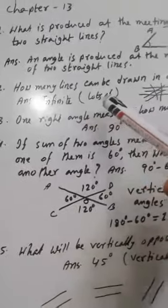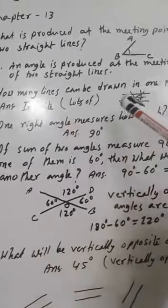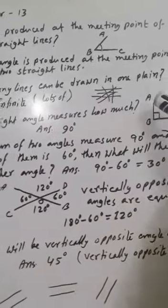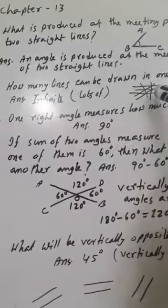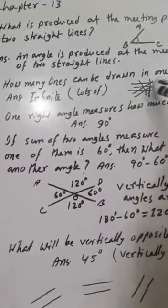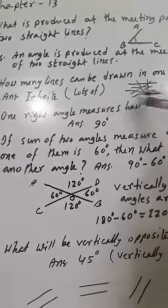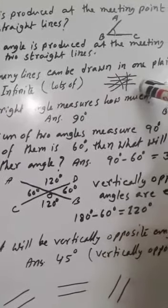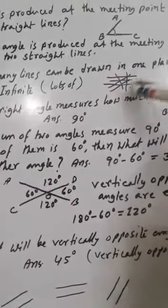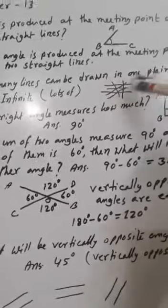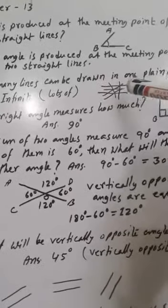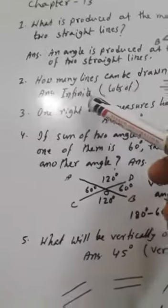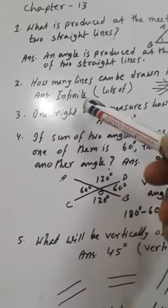How many lines can be drawn in one plane? This is a plane. In a plane, we can draw lots of lines — thousands of lines we can draw — so the answer will be infinite.